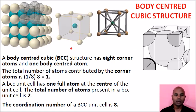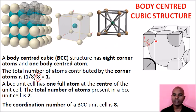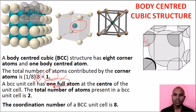Next is BCC. In BCC, we have corner atoms — 1, 2, 3, 4, 5, 6, 7, 8 — and 1 center atom. The center atom is one complete atom. So the body center atom is 1, and total number of atoms in BCC is 1 + 1 = 2.